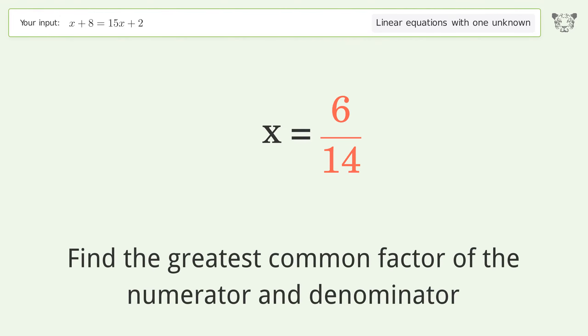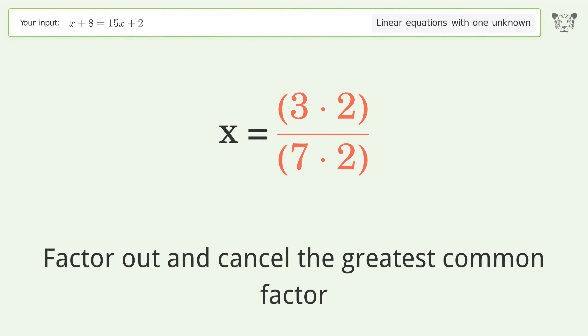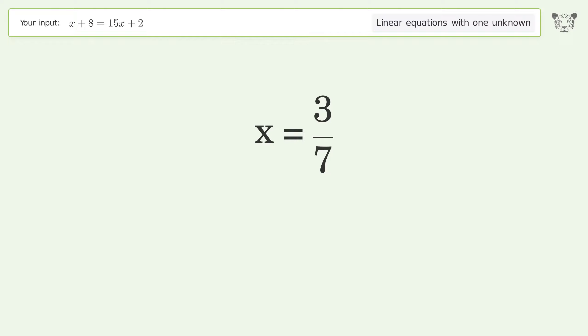Find the greatest common factor of the numerator and denominator. Factor out and cancel the greatest common factor. And so the final result is x equals 3 over 7.